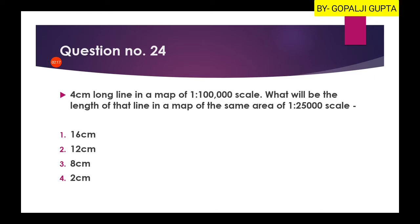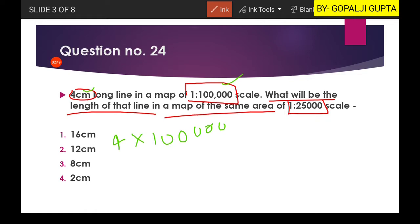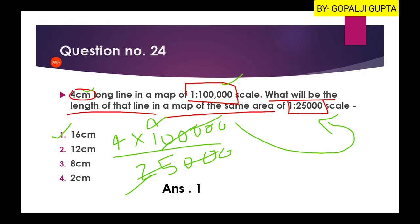Next question: a 4 centimeter long line in a map of 1 is to 1 lakh scale. What will be the length of that same line on the same area map, but the scale is now 1 is to 25,000? If you calculate the distance on the ground of this line, it will be 4 into 1 lakh according to this scale. Now you have to convert it for the scale of 1 is to 25,000. Simply divide it by 25,000 and you will get the right answer - 16 centimeter. The first option will be our right answer.